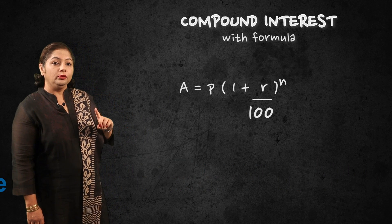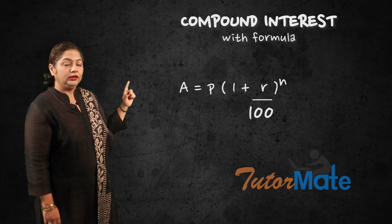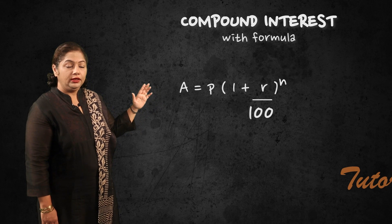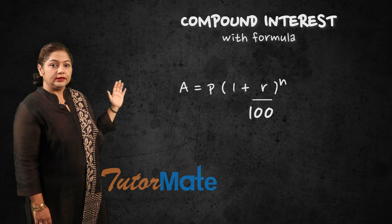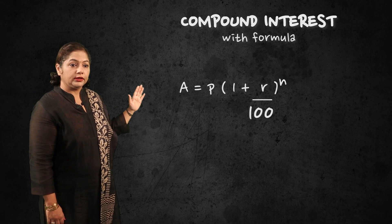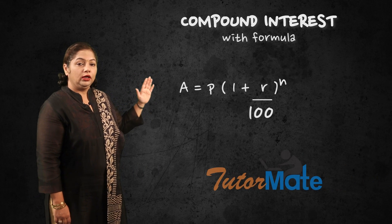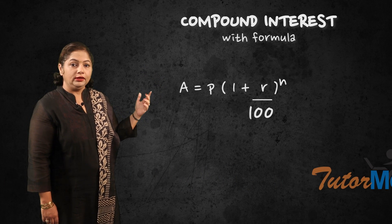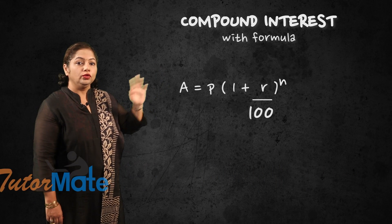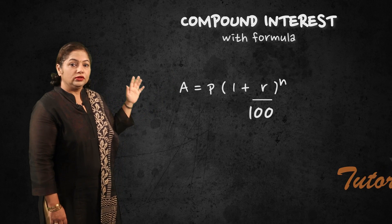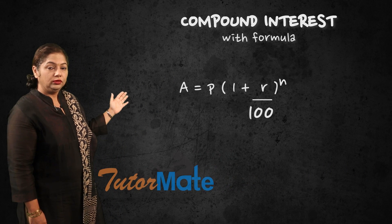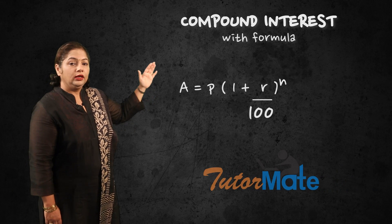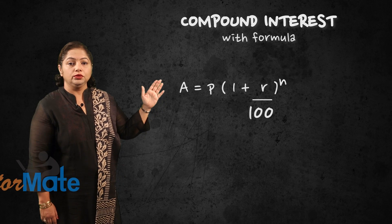Now first of all, make one thing sure: the 1 is single in the bracket. The 100 is not under 1; 100 is under R. So amount is equal to principal into bracket 1 plus R upon 100, raised to N. For 1 year it is raised to 1, for 2 years it is raised to 2 — not 2 brackets, only raised to 2. So the formula is A equals P into bracket 1 plus R upon 100, raised to N.